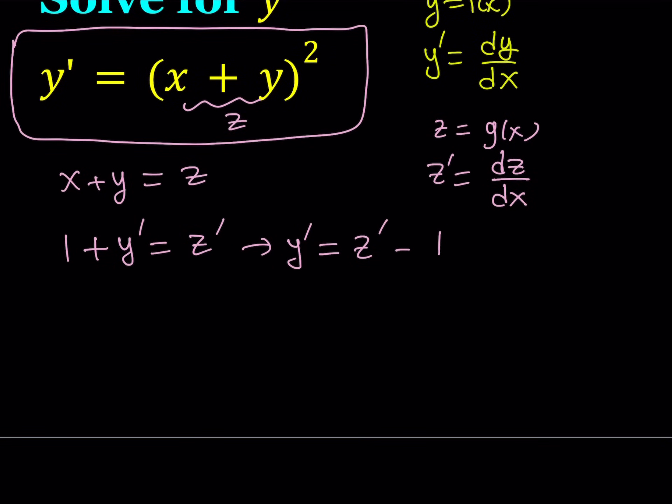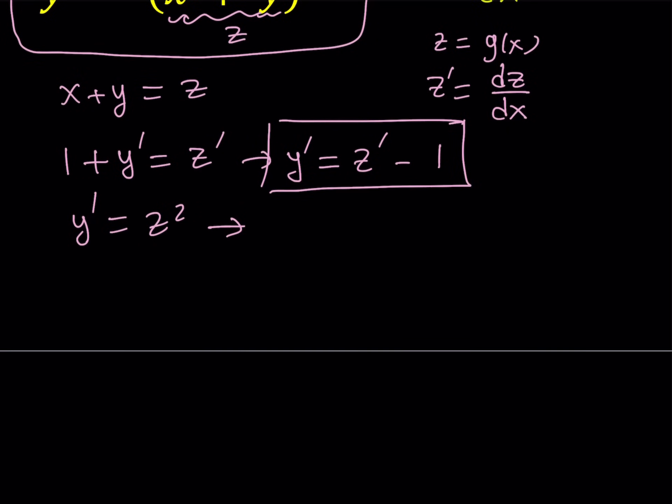Here, y prime can be written as z prime minus one. By subtracting one from both sides, we get this type of equation. Now we do know that y prime is equal to z squared, because we call this z. So y prime is equal to z squared. Now we can replace y prime, we're doing a lot of substitution here, obviously, that's critical.